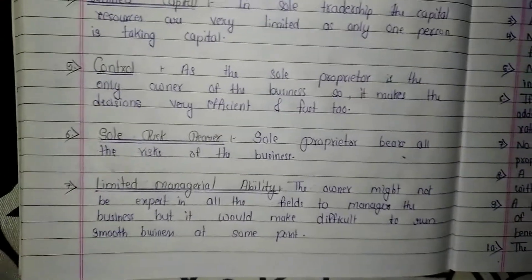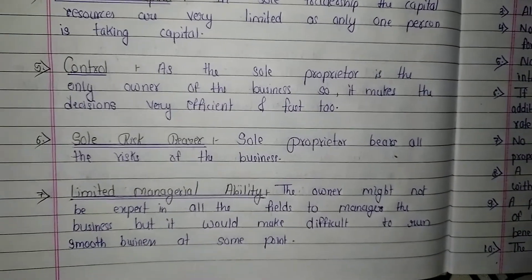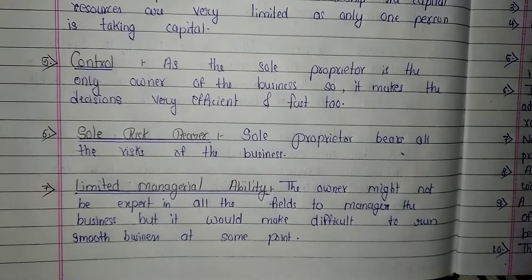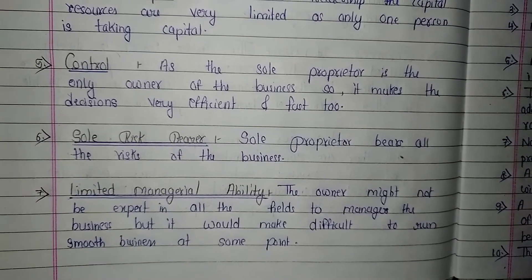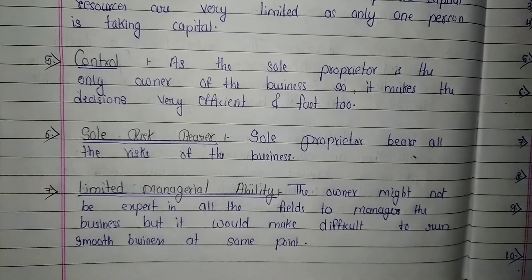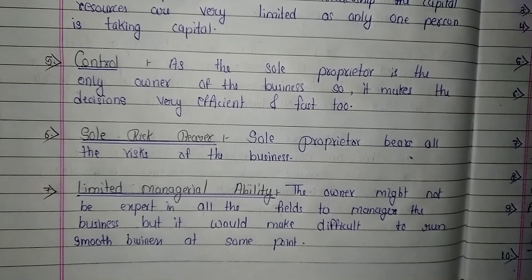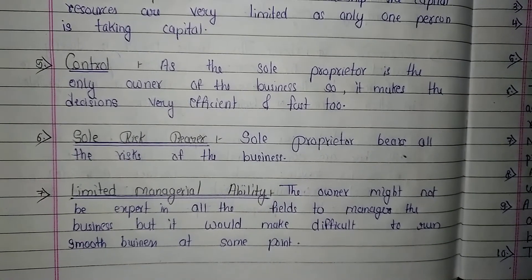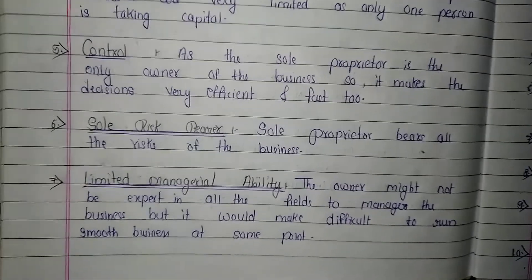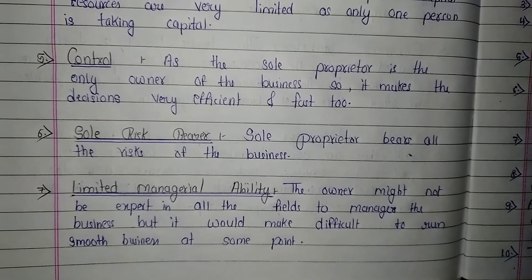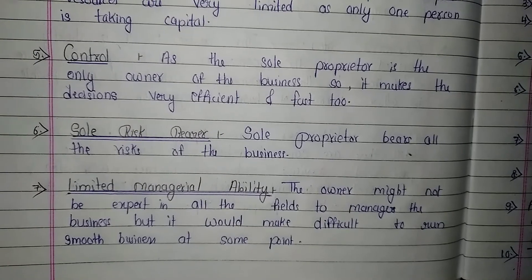The fifth characteristic is control. As the sole proprietor is the only owner of the business, decision-making is very efficient and fast. The sixth characteristic is sole risk bearer — he is the only person in the business who takes decisions, and so he bears all the risks of the business himself.